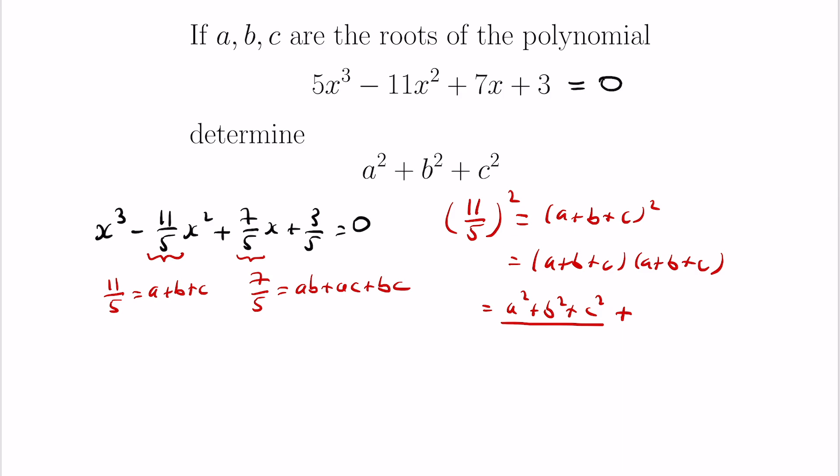Now let's look at ac. We have a contribution of ac by picking a in the first trinomial and c in the second. Then we can also pick c in the first and a in the second. So we get two copies of ac. And the same thing happens with ab. We'll have two copies of ab. Here's one and here's another. And two copies of bc. We'll have this one and then this one. So we get twice ab plus ac plus bc.